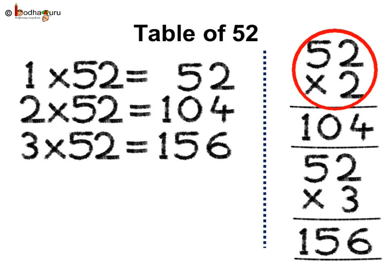52 multiplied by 2. 2 twos are 4, 2 fives are 10. So 2 times 52 is equal to 104. Next, 52 into 3. 3 twos are 6, 3 fives are 15. So 3 times 52 is equal to 156.